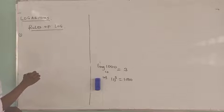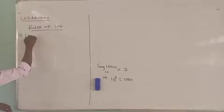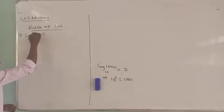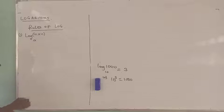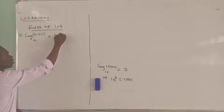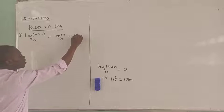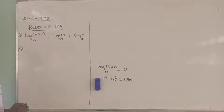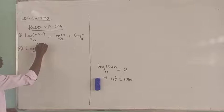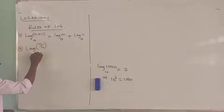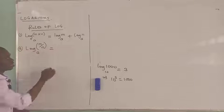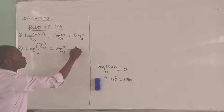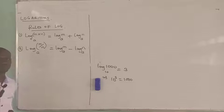Let us consider the rules of logarithms. The first one is the multiplication rule. It says: if I have the log of M times N to a base, say base A, that this is the same thing as the log of M base A plus the log of N base A. So multiplication changes to addition. The second one is the division rule: if I have the log of M over N to base A, this is the same thing as the log of M base A minus the log of N base A.